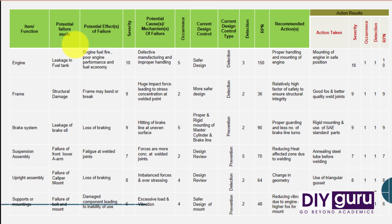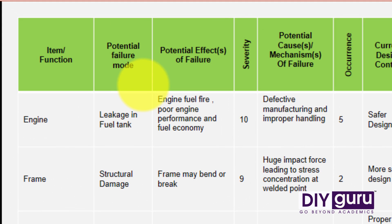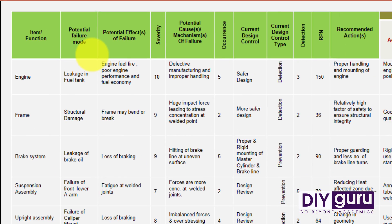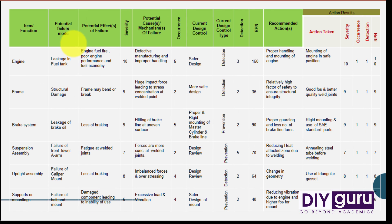Because the engine plays a wider role in your car and with engine failure you won't be able to drive it, we have put a severity of 10, which is maximum and 1 is less. Now the fifth column explains the mechanism which is responsible for the failure. In case of the engine, it is defective manufacturing and improper handling. Now the sixth column stands for occurrence.